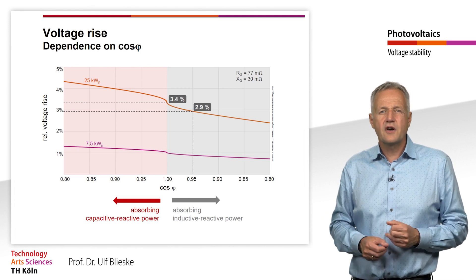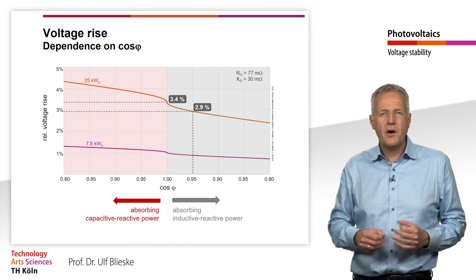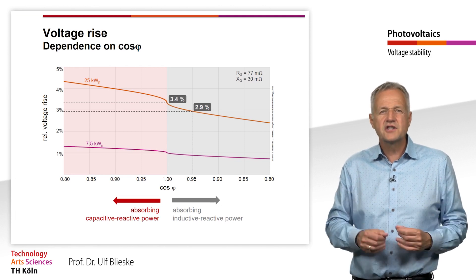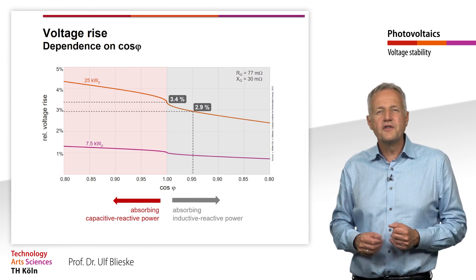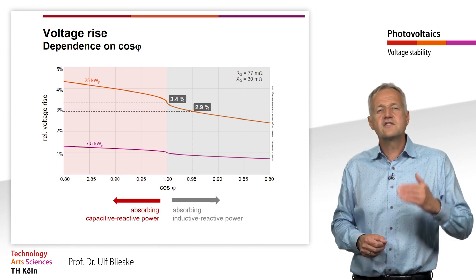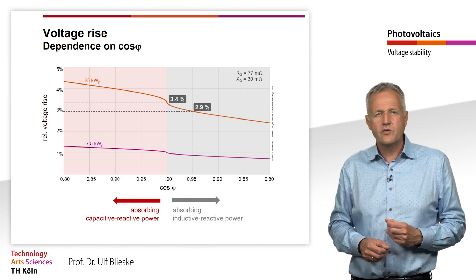If the inverter of the plant feeds in with a power factor of 1, thus without a phase shift between current and voltage, the result is a voltage increase of 3.4%. This is just above the limit provided by the grid operator.